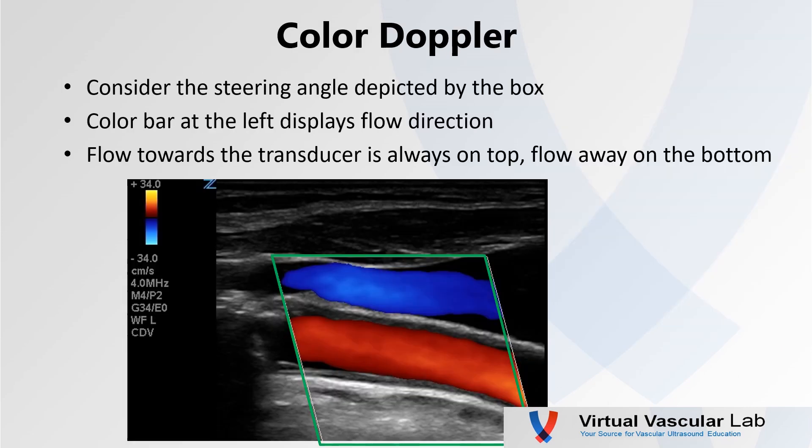Let's consider this color Doppler image of a common carotid artery. The first thing we need to do to interpret it is consider the steering angle depicted by the box, so we know our look angle or angle of incidence is coming in along the arrow. We see the color is red. Looking at our color bar on the left — flow towards the transducer is always on top, flow away on the bottom — we know flow in that common carotid artery is moving from right to left.